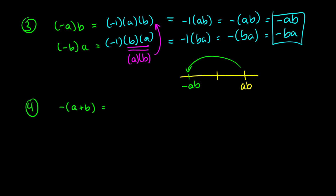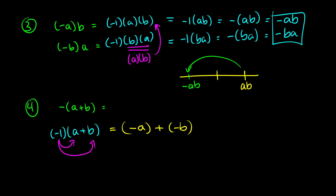Now here's where we look at negatives with addition in brackets — and really, these are just distributivity rules in disguise. With negative 1 out front and a plus b in the brackets, using distributivity we do negative 1 times a and add it to negative 1 times b, giving us negative a plus negative b. So if you ever have negative of (a plus b), you get negative a plus negative b. For example, negative (2 plus 3): doing the brackets first gives negative 5.